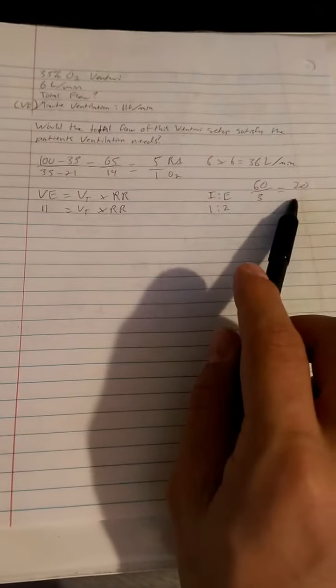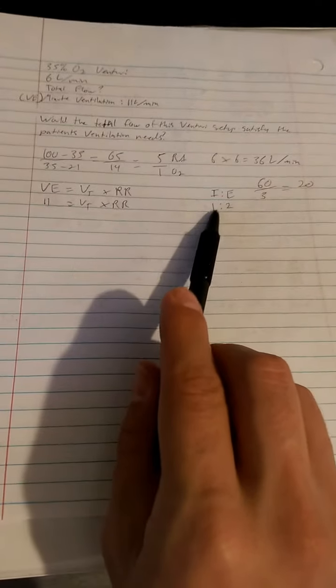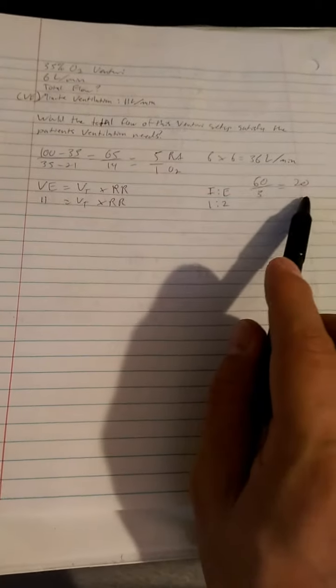You know they say, oh yeah, 12 to 18 breaths a minute. Yeah, in the case of doing this equation, assuming a 1 to 2 inspiratory to expiratory ratio, it's going to be 20 breaths. Your RR is going to be equal to 20 in that case.